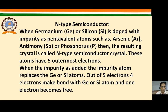When the impurity is added, the impurity atom replaces the germanium or silicon atoms. Out of its five electrons, four make covalent bonds with the neighboring germanium or silicon atoms, while one electron becomes free to move.